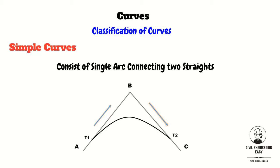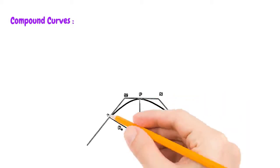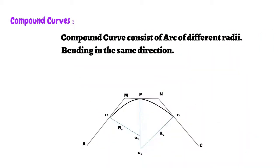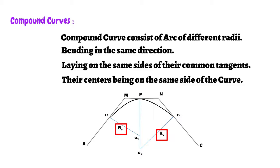The nomenclature of simple curves will be discussed in details in the upcoming videos. Compound curves is the combination of curves of two or more radius bending in the same direction and lying on the same side of the common tangent. Their centers lie on the same side of the curve. The compound curve is shown in the figure. The two radii are represented by Rs and Rl, where Rs shows the smaller radius, Rl represents the larger radius, and T1 and T2 are the two tangent lines.